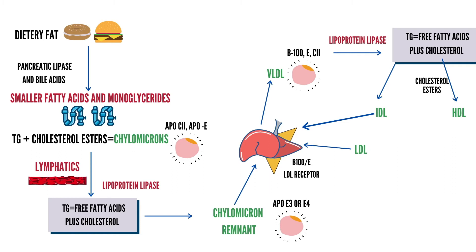LDL delivers cholesterol esters to peripheral tissues where they can be converted to free cholesterol. Cholesterol has important functions including being an essential component of cell membrane bilayers, production of the myelin sheath of nerves, adrenal and gonadal steroidogenesis, and production of bile acids. Hepatocytes play the major role in catabolism of LDLs; their uptake is mediated through the high-affinity ApoB100E receptor on hepatocyte surfaces — the same receptor responsible for uptake of chylomicron remnants and IDLs. Free cholesterol in excess of metabolic needs is re-esterified for storage.